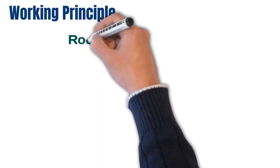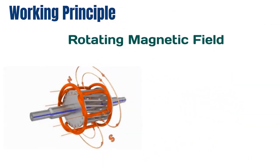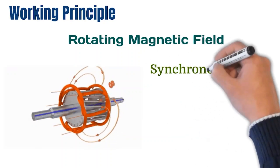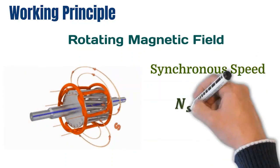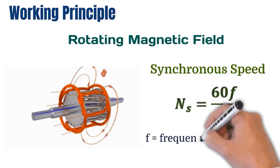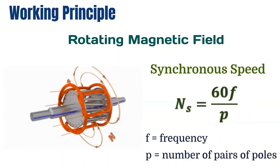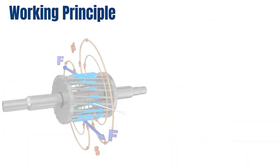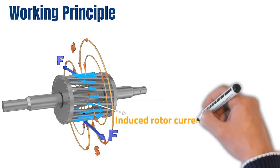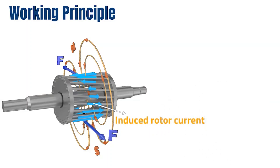When a three-phase voltage of constant frequency is applied to the stator winding, a rotating magnetic field is created in the air gap. This field rotates at synchronous speed, which can be derived using the synchronous speed equation. This rotating magnetic field is sensed by the three-phase winding in the rotor, inducing a balanced three-phase voltage. The rotor winding is closed using end rings, so the induced voltage creates a three-phase current. This rotor current reacts with the air gap flux and produces a torque to rotate the rotor.